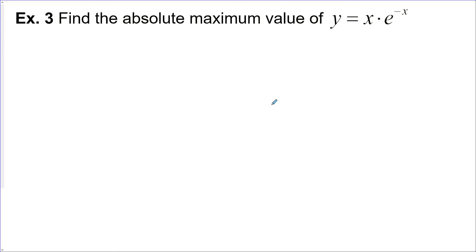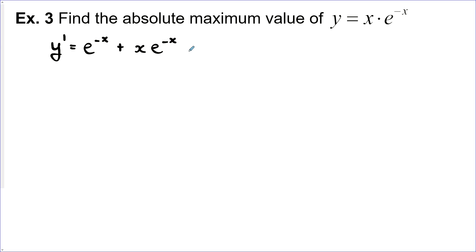Find the absolute maximum value of y equals x times e to the power of negative x. Let's start by taking the first derivative using the product rule. The derivative of x is 1, leave e to the negative x alone; plus x times the derivative of e to the negative x, which is e to the negative x times the derivative of negative x, which is negative 1. We have e to the negative x common, so we factor that out and are left with 1 minus x.